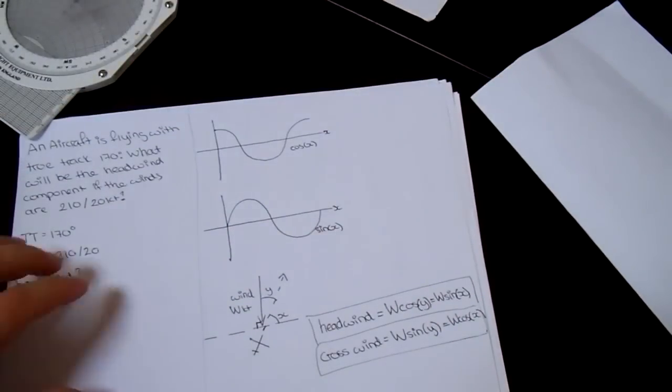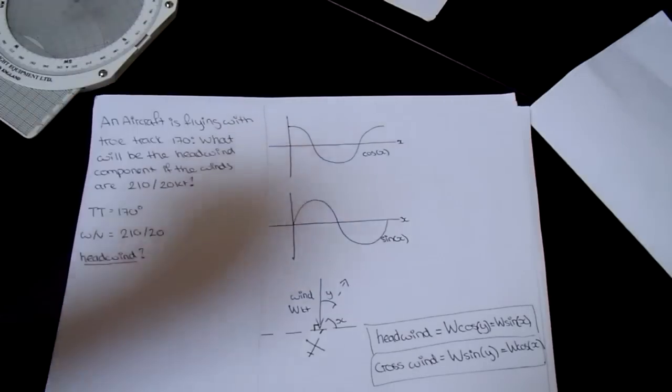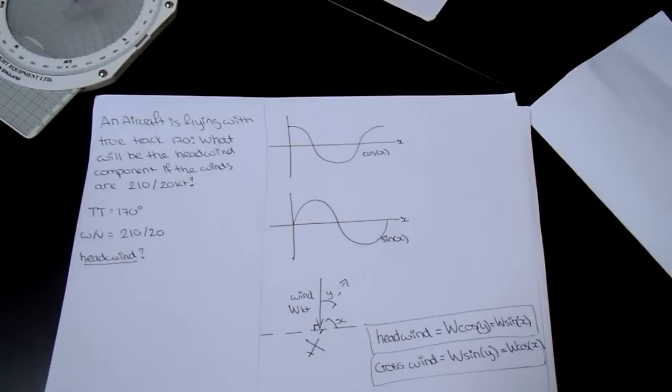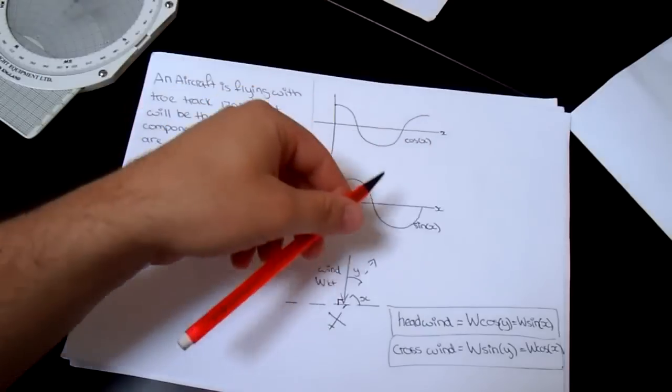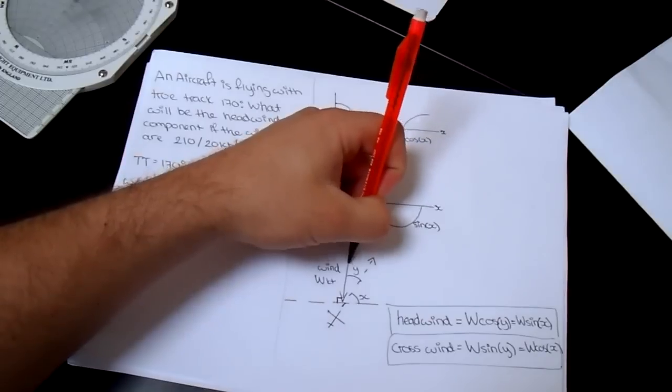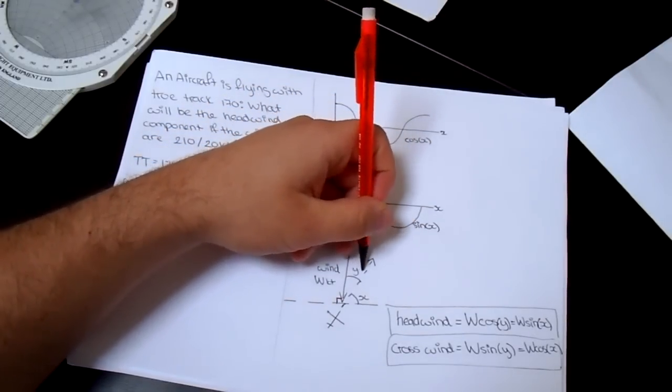We've got two very basic mathematical lines, and I'm sure everybody in their life has seen at least once. We've got the cos and the sine, and actually we use these two to find components. So if you look at the bottom diagram, if you have an aircraft with a certain heading, and it's got a difference between the wind, where the wind's coming from, and the heading, and we call that difference in angle Y.